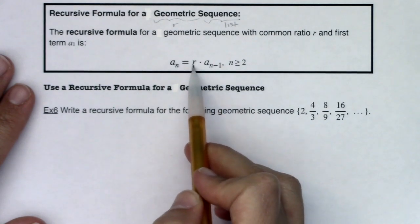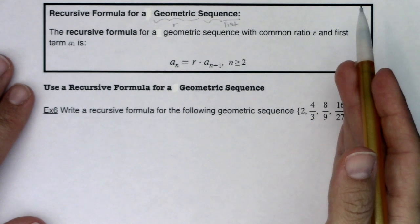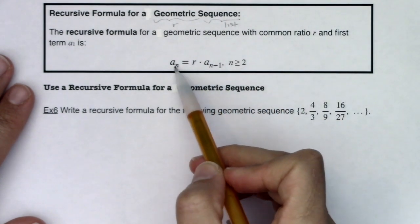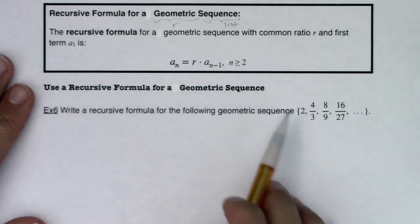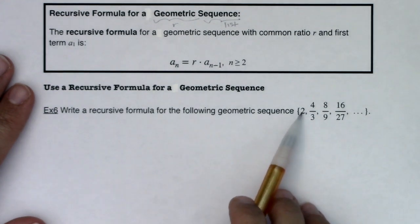Current term is previous term times r because that's how we get from one term to the next in a geometric sequence. You take your term, multiply it by r, and you get the next term. So use a recursive formula for a geometric sequence.